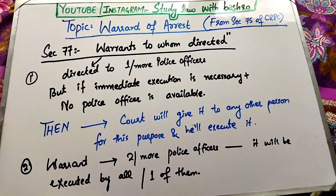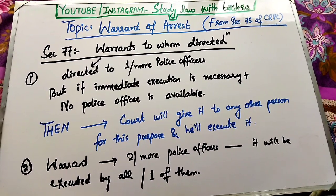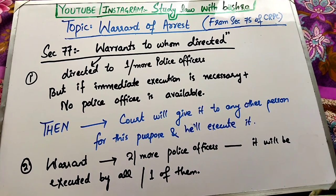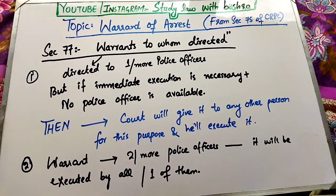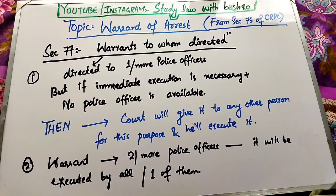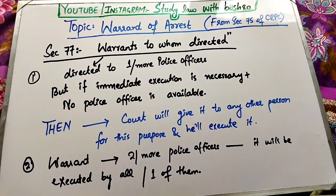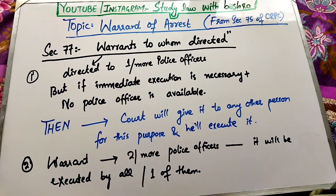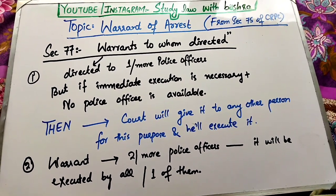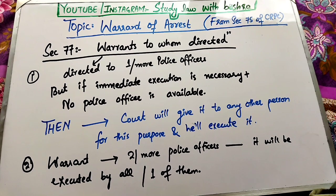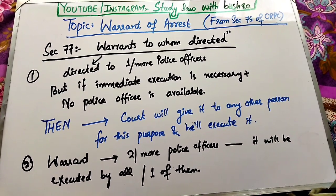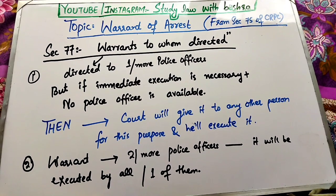Second clause کہتی ہے کہ اگر warrant دو یا دو سے زیادہ police officers کو issue کیا جاتا ہے تو وہ warrant تمام police officers یا پھر ان میں سے کوئی ایک بندہ execute کر سکتا ہے. یعنی تمام officers بھی اپنی duty نبھا سکتے ہیں یا ان میں سے کوئی ایک بھی. اس کے بعد آتا ہے section 78.